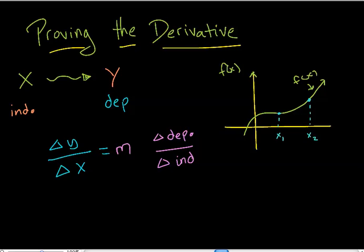Notice that at x1, x1 has kind of this height right here. And I'll call that f of x1. And at x2, it's kind of got this height over here. And I'll call that f of x2.